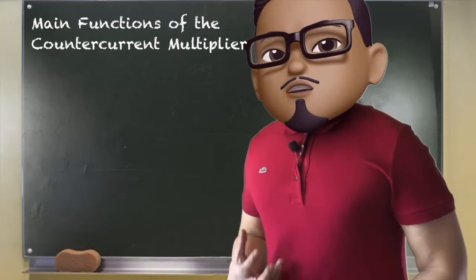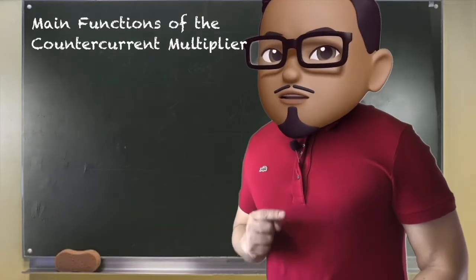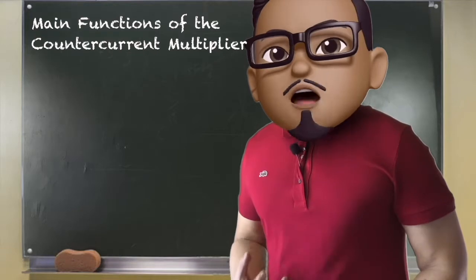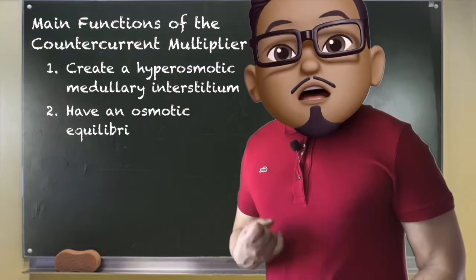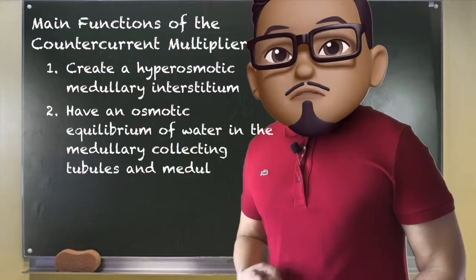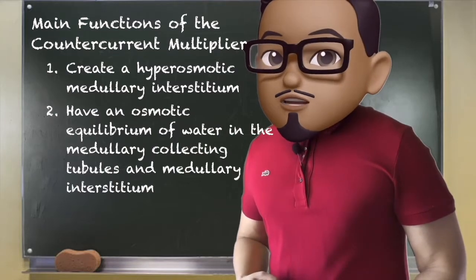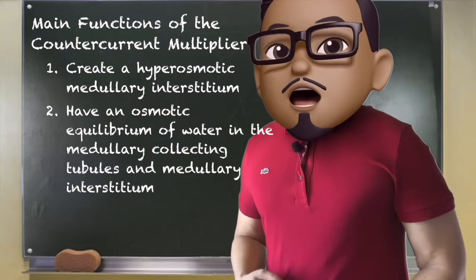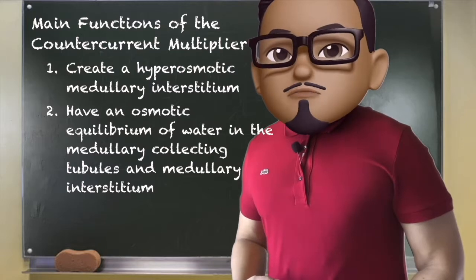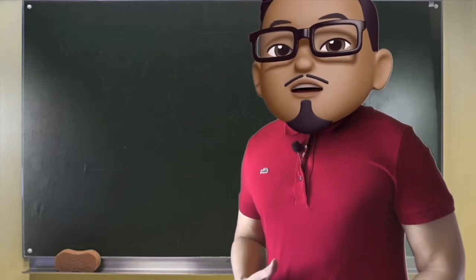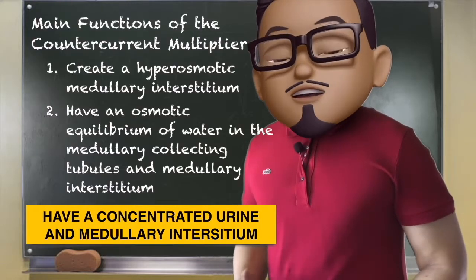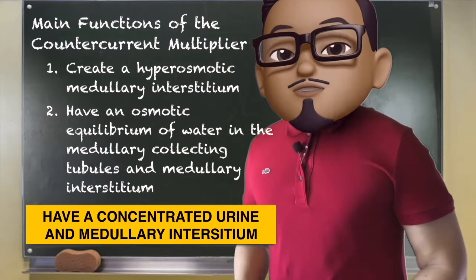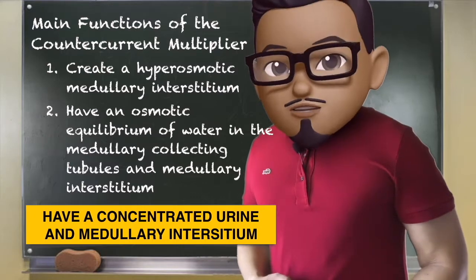To have a concentrated urine, the kidneys function as a counter-current multiplier. The kidney has to create a hyperosmotic medullary interstitium, and number two, have an osmotic equilibrium of water in the medullary collecting tubules and the medullary interstitium — simply, to have a concentrated urine and a concentrated medullary interstitium.